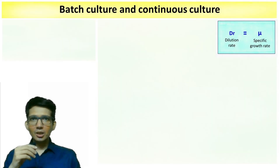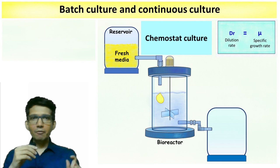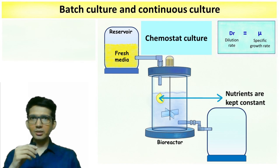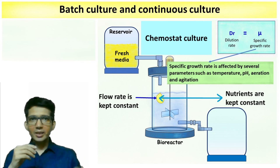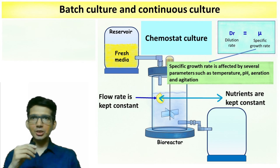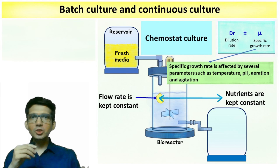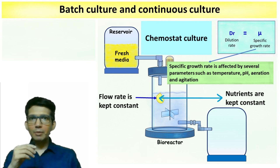This type of continuous culture is termed a chemostat, which means the chemicals or nutrients in the bioreactor remain constant. This is achieved by maintaining a constant flow rate of fresh media. However, the specific growth rate mu is also affected by other parameters such as temperature, pH, aeration, and agitation. If any of these parameters changes, mu will change and the equation DR equals mu will not hold true.